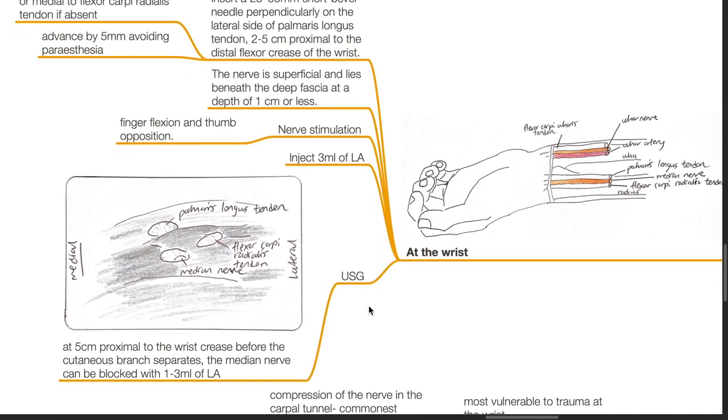Ultrasound guidance: at 5 cm proximal to the wrist crease before the cutaneous branch separates, the median nerve can be blocked with 1 to 3 mL of local anesthetic.